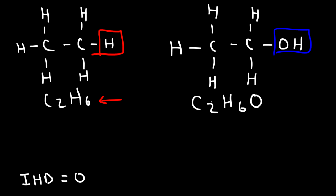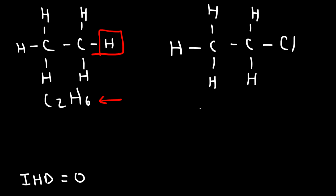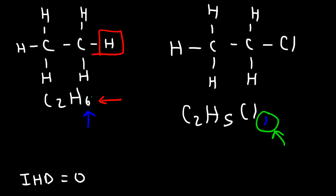If we replace a hydrogen with a halogen like chlorine, the formula becomes C2H5Cl — we lost one hydrogen. To bring the effective count back to six, we add one per halogen atom. So for every chlorine or fluorine, you increase the number of effective hydrogen atoms by one.